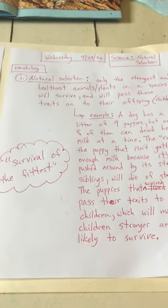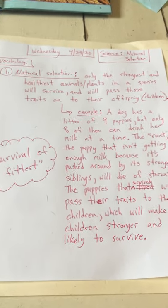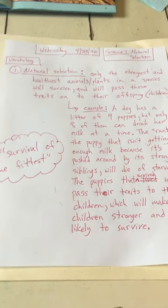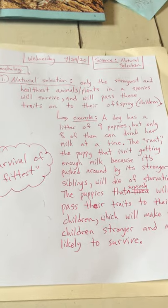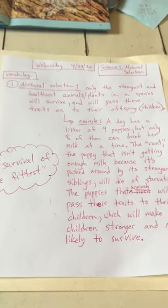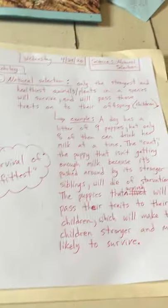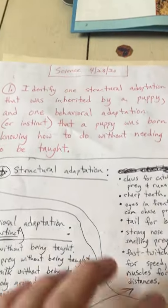Good afternoon, Veritas scientists. Today is Wednesday, April 29th, 2020, and we are learning about something called natural selection today. But first, we're going to review what we did yesterday on April 28th.